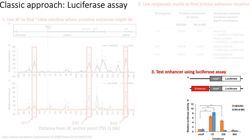Once they identified the three candidate enhancer sequences, they used the luciferase assay to test the enhancer functionality of those three candidates in different cell types. For each candidate enhancer, they cloned these enhancers upstream of a minimal promoter controlling a firefly luciferase reporter gene, then transfected different cell lines with this reporter construct and measured the relative luciferase activity compared to cell lines transfected with a construct with no enhancer cloned upstream of the minimal promoter.